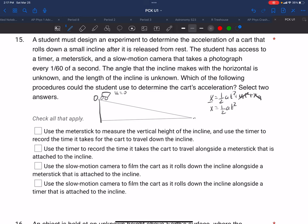So that's just up until this point. Now we're going to take a look at what the student has available: a timer, a meter stick, a slow motion camera that takes a photograph every 1/60th of a second. The angle is unknown, angle theta is unknown, the length of the incline is unknown. So which of the following could they use to determine the car's acceleration?